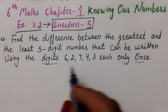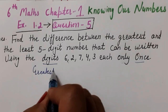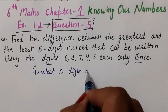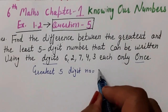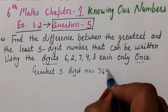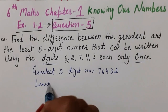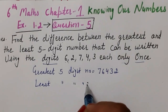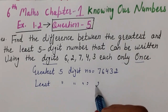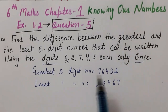To form the greatest 5-digit number using digits 6, 2, 7, 4, 3, we arrange them in descending order: 7, 6, 4, 3, 2 — giving us 76432. To form the least 5-digit number, we arrange them in ascending order: 2, 3, 4, 6, 7 — giving us 23467. These are the greatest and least 5-digit numbers using those digits.